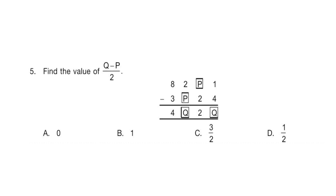Question 5: Find the value of (Q - P) upon 2. You can pause the video and try to solve the question. The correct answer is option B, which is 1.